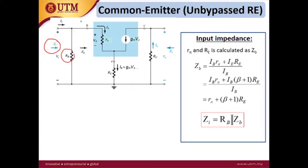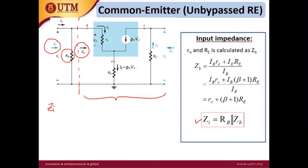For the common emitter unbypassed, we need to consider RE. From this point you will see RB, which is in parallel with the resistor network ZB. So ZI is equal to RB in parallel with ZB.